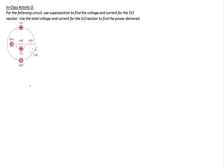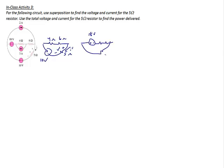Let's do one final demonstration of superposition to find the power delivered to the 5 ohm resistor. We have four independent sources, so we're going to have four circuits. The first has the 10 volt source on, with a 4 ohm resistor in series with a 6 ohm resistor, a 5 ohm resistor, and the voltage and current across the 5 ohm labeled V prime and I prime. The second has the 18 volt source on with a 4 ohm, 6 ohm, and 5 ohm resistor, with V double prime and I double prime across the 5 ohm.